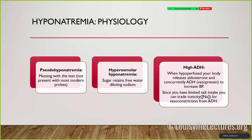Starting with the most common issue - hyponatremia. The classic classification includes pseudo-hyponatremia, hyperosmolar hyponatremia, and high ADH states (true hyponatremia). Pseudo generally means something is messing with the test, like triglycerides or total protein. Hyperosmolar hyponatremia is when an extra sugar or alcohol pulls water into the intravascular space and dilutes sodium - a true hyponatremia but from something generally correctable. High ADH states relate to the general principle of maintaining blood pressure.